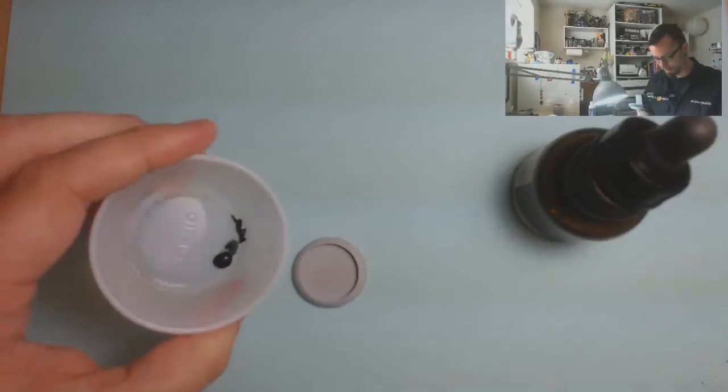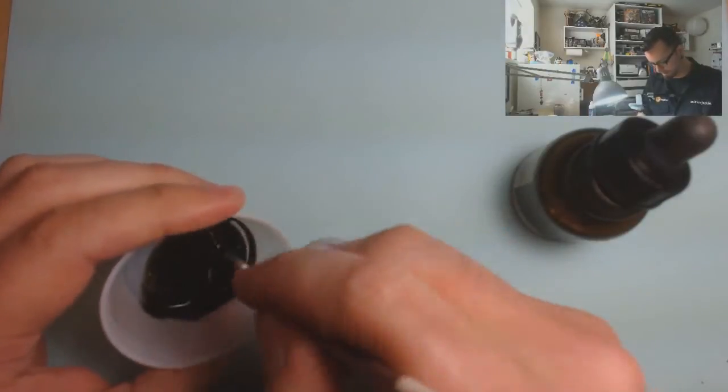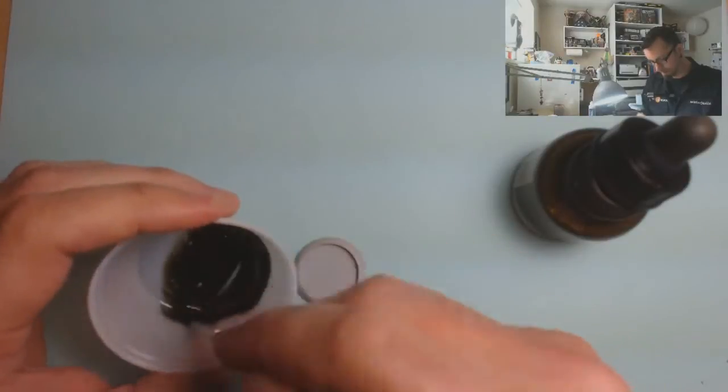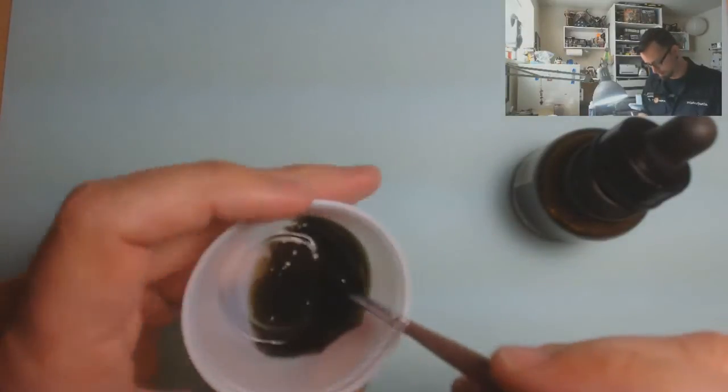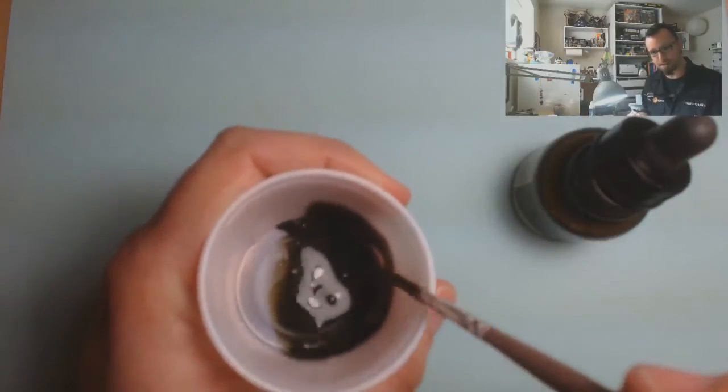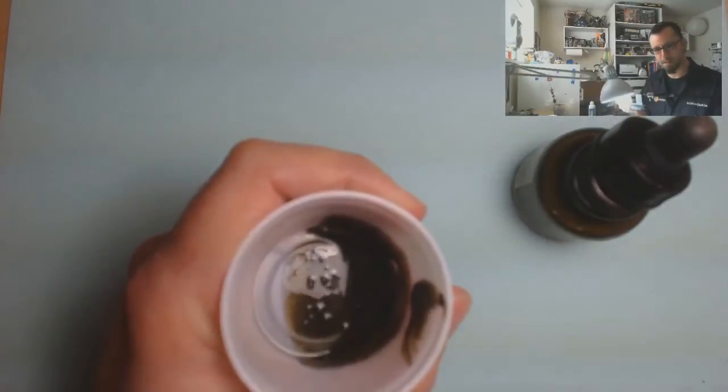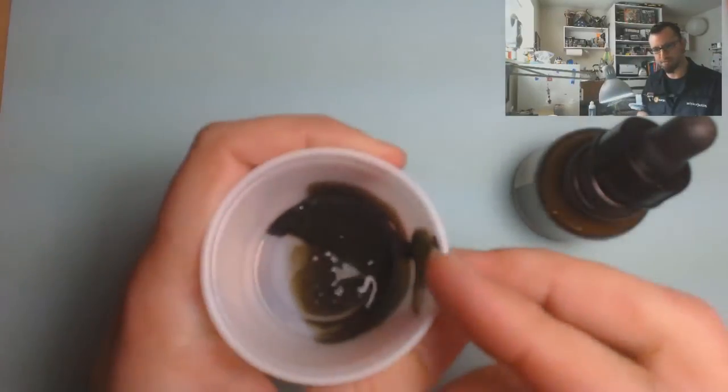And I'm going to start by taking a cruddy old brush, mixing those together to see what kind of color I get. Now you can see, maybe, a bit of that shine, the reflective metallic shine to it.